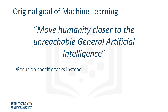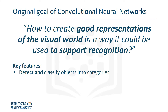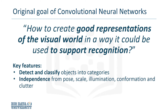So the original goal of the CNN was to form the best possible representation of the visual world in order to support recognition tasks. The CNN solution needed to have two key features. It needed to be able to detect the objects in the image and place them into an appropriate category. But it also needed to be robust against differences in pose, scale, illumination, conformation, and clutter.